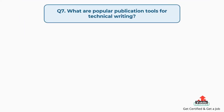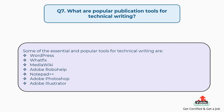Question number seven: what are popular publication tools for technical writing? Some of the essential and popular tools for technical writing are: WordPress, WhatFix, MediaWiki, Adobe RoboHelp, Notepad++, Adobe Photoshop, and Adobe Illustrator.